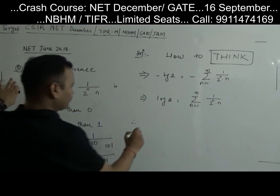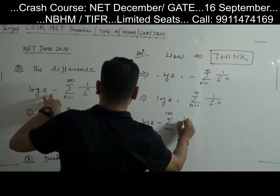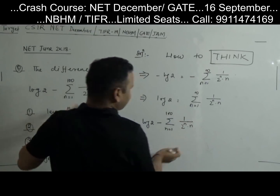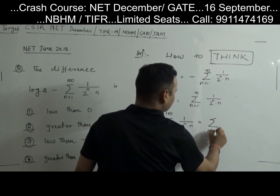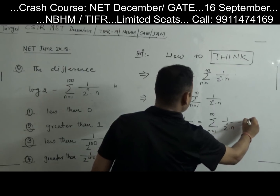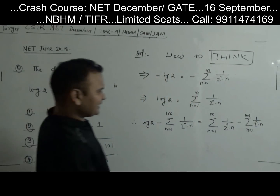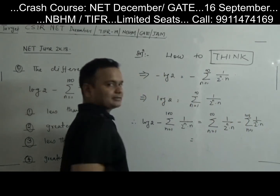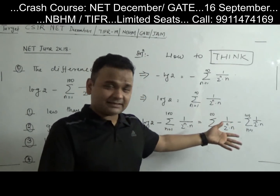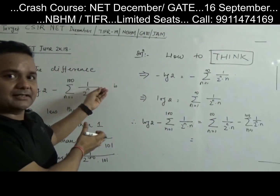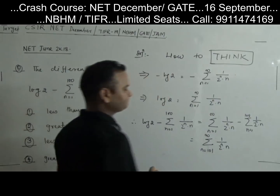Therefore, log 2 minus the sum from n=1 to 100 of 1/(2^n · n) is equal to the tail sum from n=101 to infinity of 1/(2^n · n). Since this series is convergent, and the tail is a sum of positive numbers, this difference is greater than 0. So options 3 and 4 are the doubtful ones.